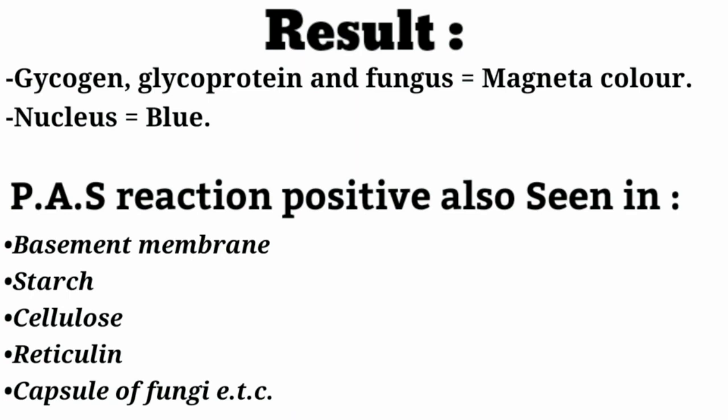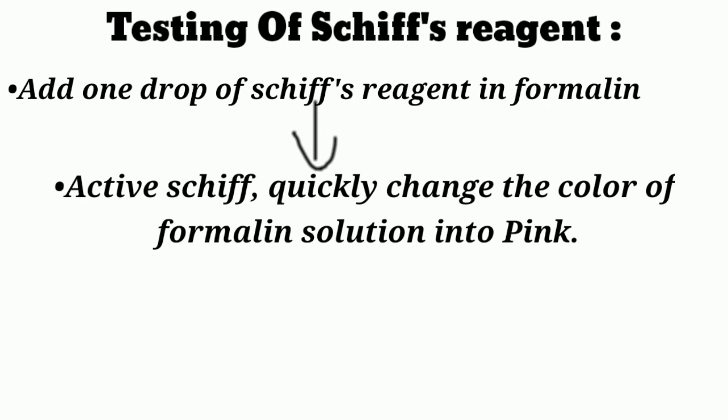PAS stain is mainly used to detect glycogen and fungi. Testing of Schiff reagent: to test if Schiff reagent is active, add one drop of Schiff reagent into formalin. If it is active, it will quickly change the color of the formalin solution to pink. If it does not change to pink color quickly, then it is not active.